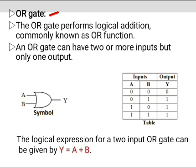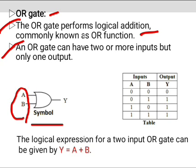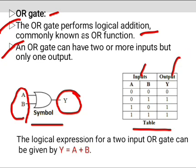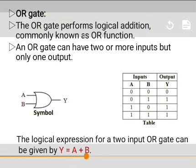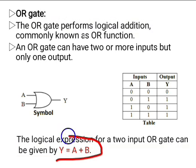The next basic gate is the OR gate. The OR gate performs logic addition, commonly known as the OR function. An OR gate can have two or more inputs but only one output. Consider a two-input OR gate — this is the symbol of the OR gate. A and B are the inputs and Y is the output. The logical expression of a two-input OR gate is given by Y equals A plus B.